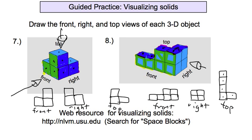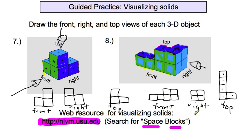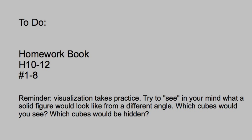Here's our web resource. You can take a pause right now and go to this — just search for 'Space Blocks.' You can put together some shapes that look like this and then rotate them with your mouse, and you can look at them from all the different views. That should help you as you are trying to visualize these 3D objects built by a bunch of cubes. So what are we doing for our work today? Homework H10-12, and we're going to be doing number one through eight only. Don't move on to nine and ten — just do one through eight only. Good luck.